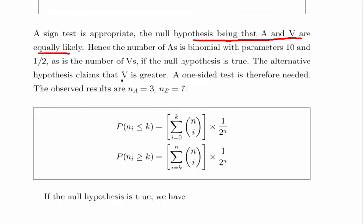The alternative hypothesis is that V is greater. Now that actually has importance later on. That means it's a one-sided test. A one-sided test is therefore needed. That's particularly important when we start looking at the tables.